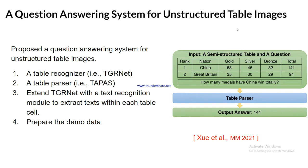An unstructured table is when you have table data in an unstructured formation in the form of an image, in which you cannot directly use SQL queries or directly fetch a particular record from particular rows or columns.